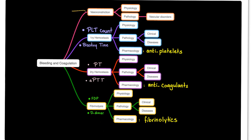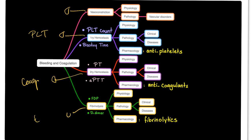Who is the hero in vasoconstriction? The blood vessel. How about primary hemostasis? The freaking platelet. How about secondary hemostasis? The coagulation factors. And in fibrinolysis, it's Mr. TPA. Where's the problem in ITP or TTP? The problem here is in primary hemostasis.